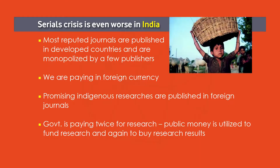Before entering into the solution, let me show you the special situation in India. India is a developing country and the situation of journal management in libraries is even worse here. Most reputed journals are published in developed countries and are monopolized by a few publishers. I have used the term monopoly, but I think the more accurate term is oligopoly — monopoly is where the entire market is dominated by one single player, while oligopoly is where five or six major players dominate the market.